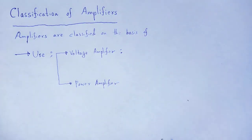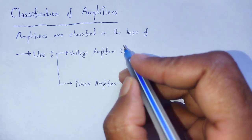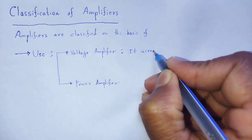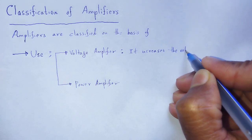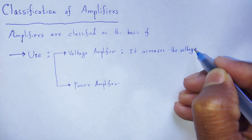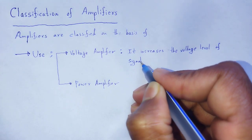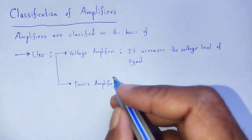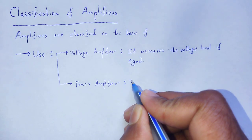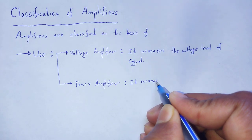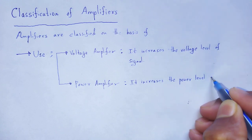What is a voltage amplifier? As the name indicates, it amplifies voltage — it increases the voltage level of the signal. In the same way, a power amplifier increases the power level of the signal.